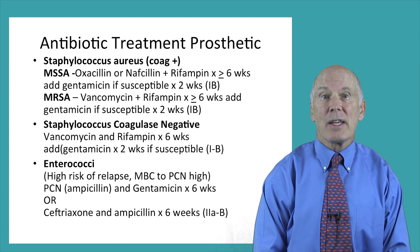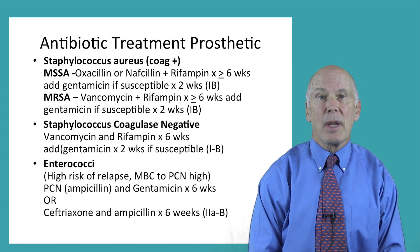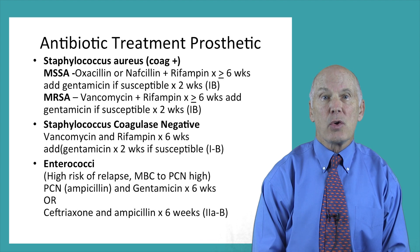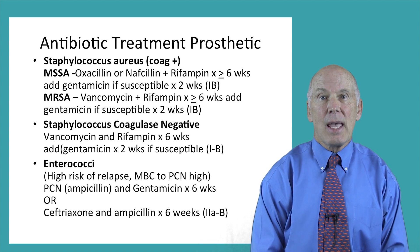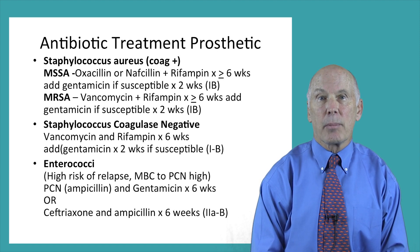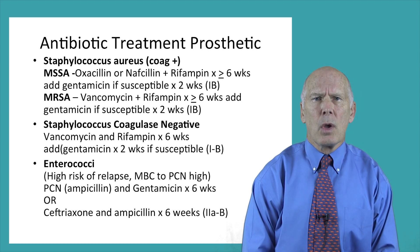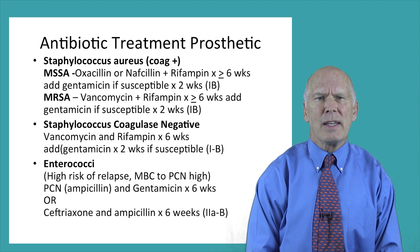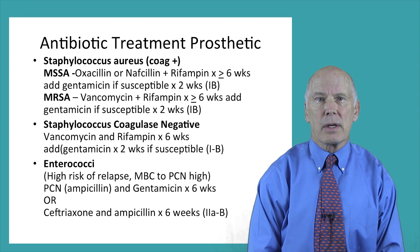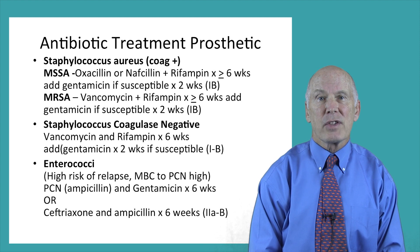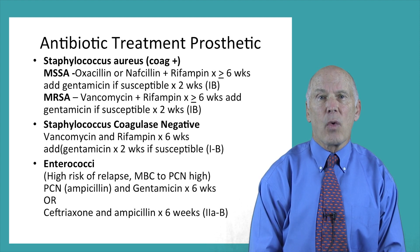Antibiotic treatment is similar to native valve, except rifampin is added to most regimens because this antibiotic is able to more readily penetrate biofilm commonly covering prosthetic material. Also, the duration of therapy is longer. For coagulase-negative staphylococcus, vancomycin combined with rifampin for six weeks and gentamicin for two weeks is the regimen of choice.